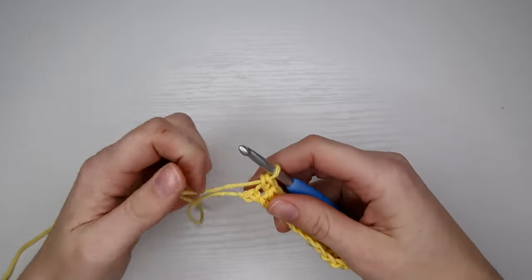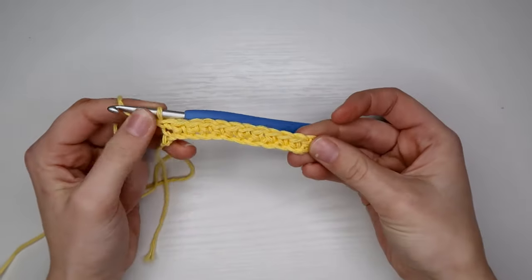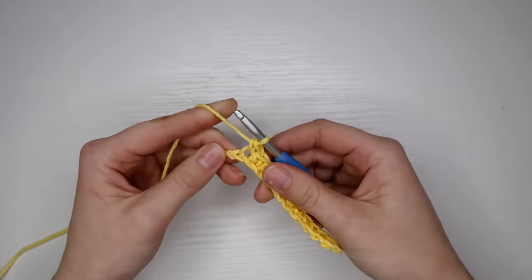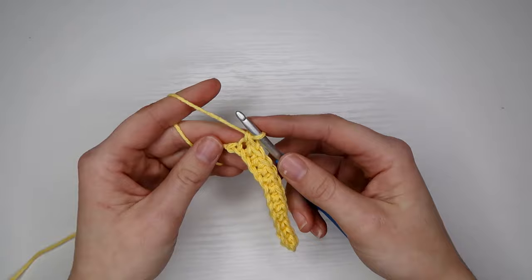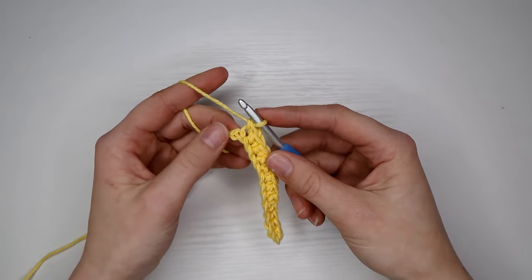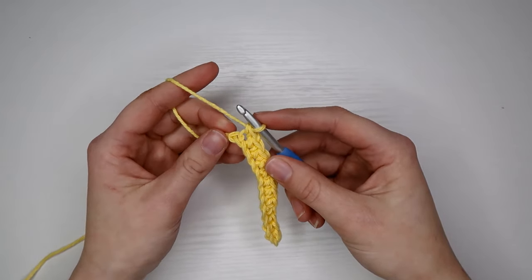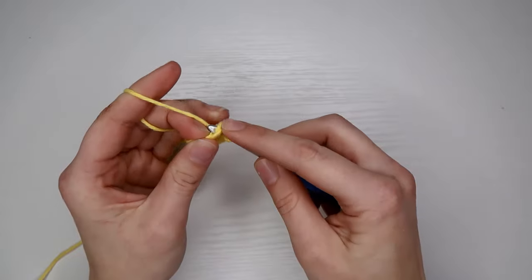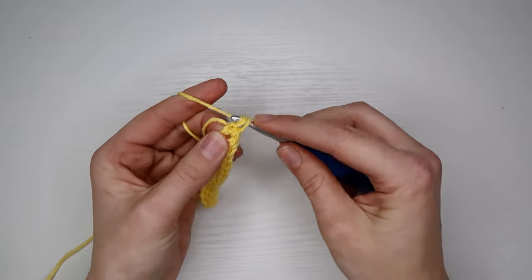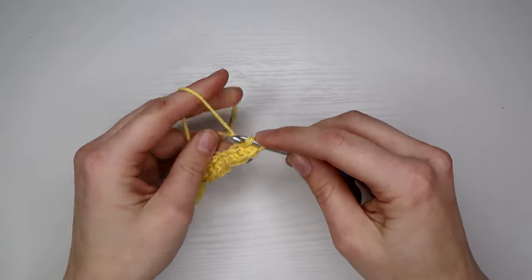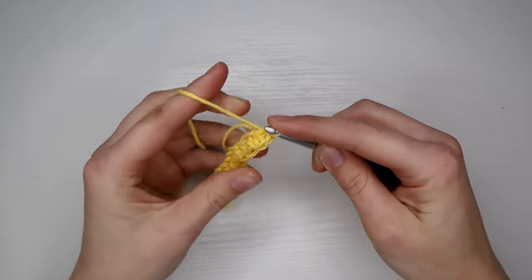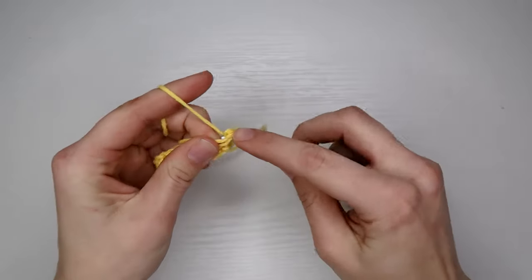I've done single crochets all the way up my chain and the only thing I have left is this last chain right here. So what I'm going to do is place three single crochets right here in this top stitch. One, two, and three.